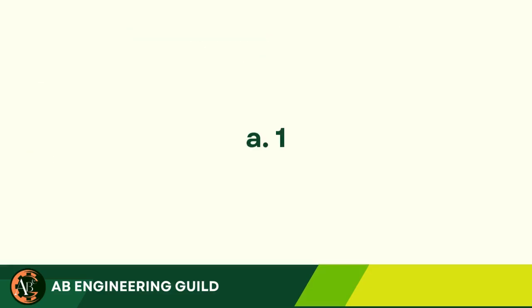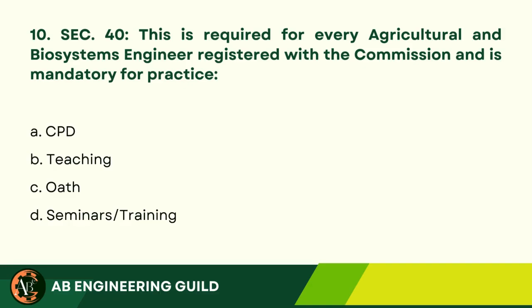Answer: A. 1. Question 10: Section 40. This is required for every Agricultural and Biosystems Engineer registered with the Commission and is mandatory for practice. A. CPD. B. Teaching. C. Oath. D. Seminars/Training.